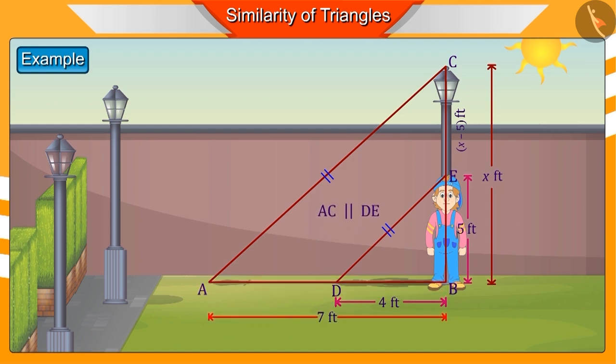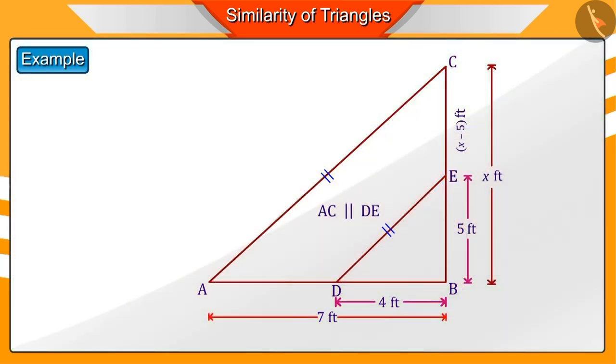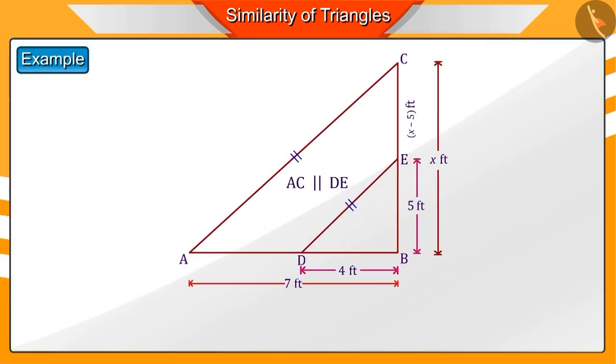Looking at this picture, we can say that line DE intersects the sides AB and BC of the triangle ABC at points D and E respectively, which is parallel to the third side AC of triangle ABC.